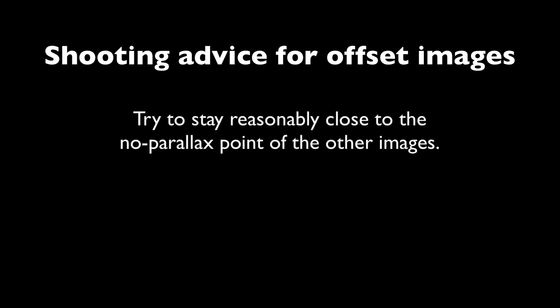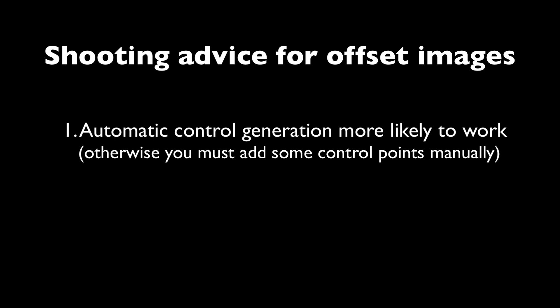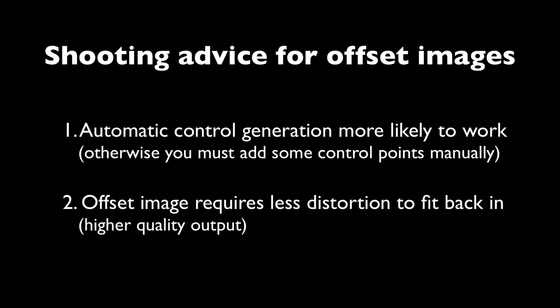A little piece of advice: you don't have to get your camera exactly back to that No Parallax point position for the offset image, but you still want to be reasonably close to where the other images were taken from. The reason is twofold: PTGUI's control point generator will have a much easier time generating control points for that offset image, and the image won't need to be deformed as much when mapping it back into the rest of the panorama if it was taken close to the original images.